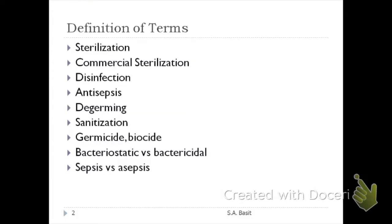Degermination is the process of removing organisms from a small part of the body. For example, during manufacturing, you apply 70% alcohol only to a small part of the body — that is degermination. Sanitization is the reduction of the number of microorganisms to a safe public health level.